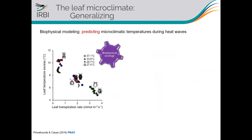Using this relationship and biophysical modeling — measuring all necessary parameters for each species — we computed the leaf temperature excess when attacked by each species as a function of leaf transpiration. During heat wave conditions, spider mites experience about 10°C above ambient air while aphids experience about 6°C above ambient air. So there is substantial warming of the leaf surface.